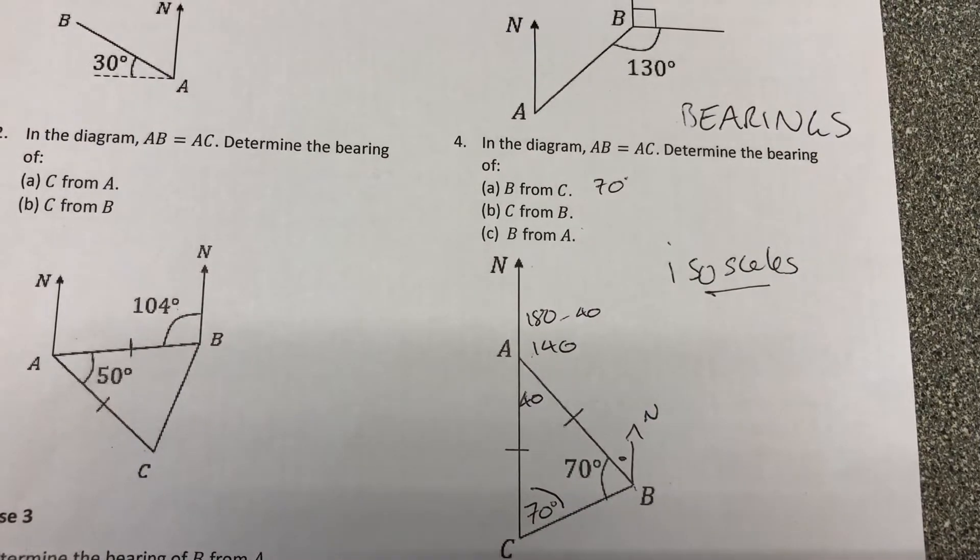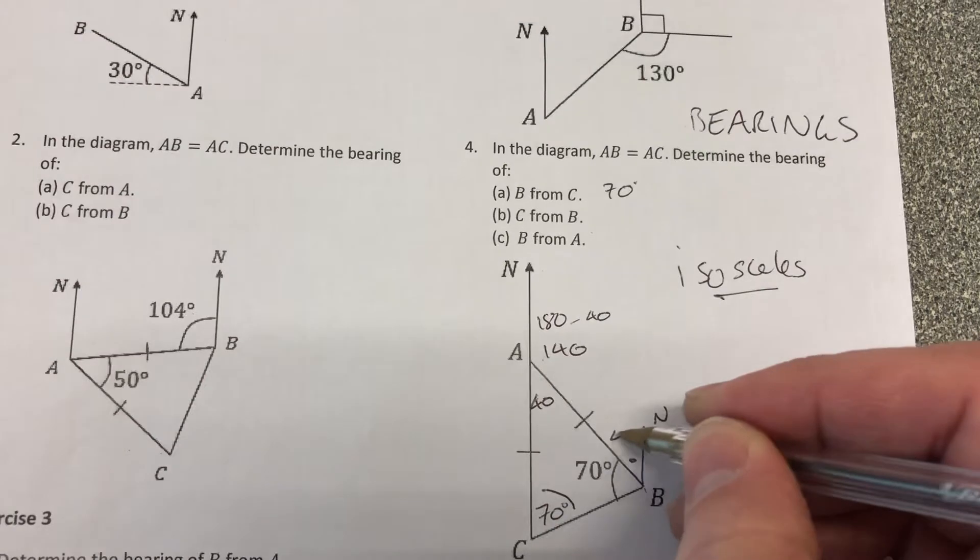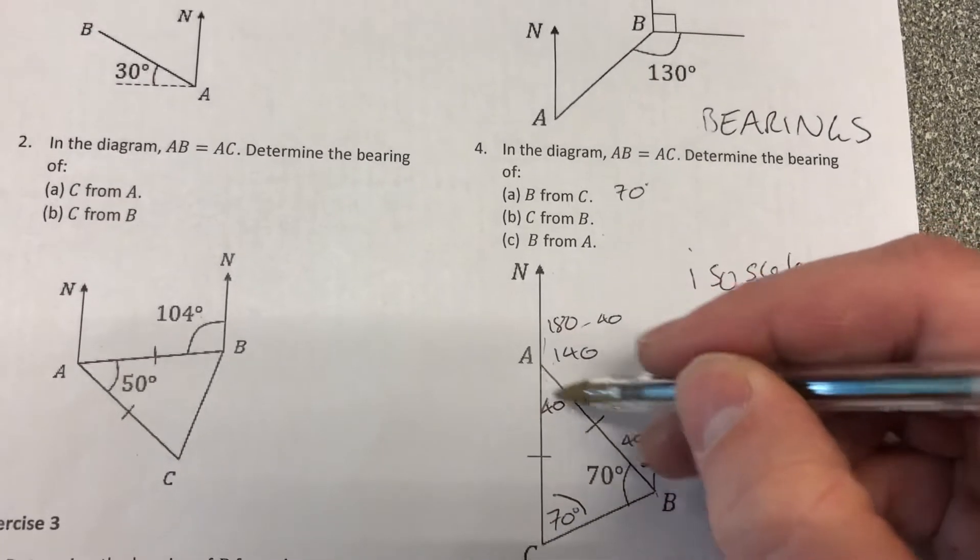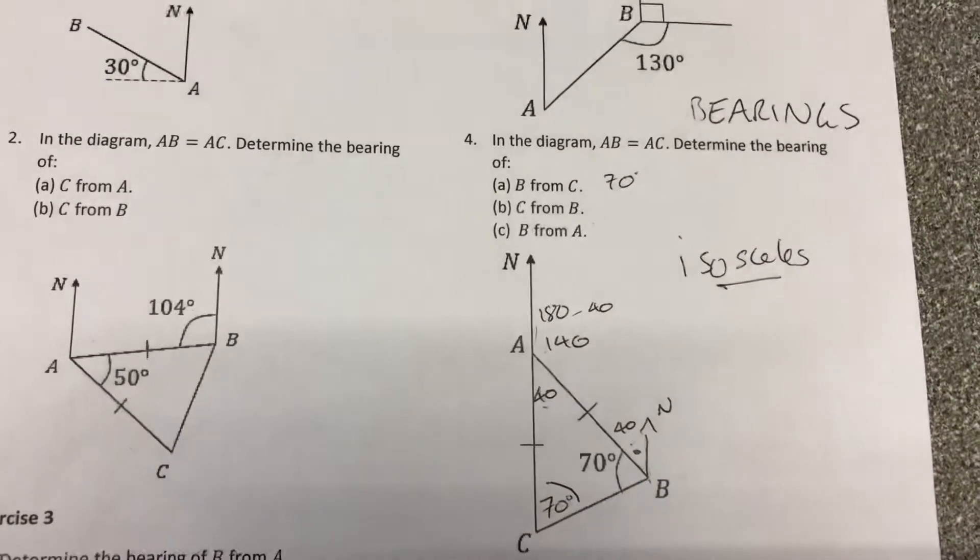Yeah, which is going to be 180 take away 140, giving you 40 because of co-interior angles. So we've got the co-interior angles there or alternate angles there. There are many ways we can work at that. So that's 40. And then?